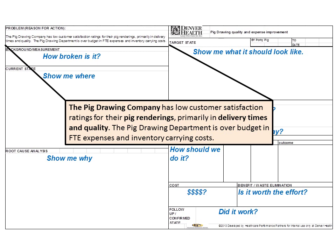To create the problem statement, we need to identify the customer, process, and waste in the situation — being careful not to include a cause, solution, or point fingers at a person. The company stated their problem as: 'The Pig Drawing Company has low customer satisfaction ratings for their pig renderings, primarily in delivery and quality.' The customer is the Pig Drawing Company, the process is pig rendering, and the waste is poor quality and timeliness. The company also identified being over budget on staff and inventory costs; if that creates too large a scope, it would go on its own separate A3 form.